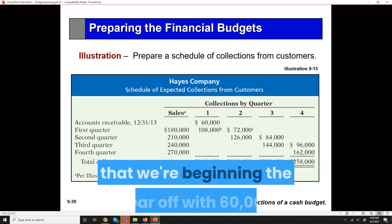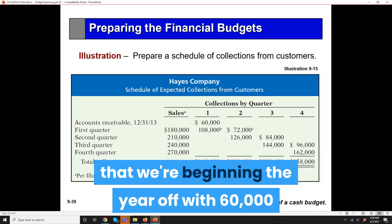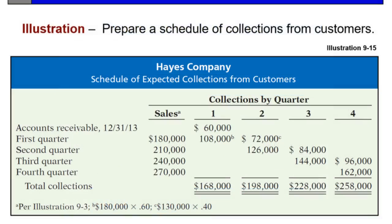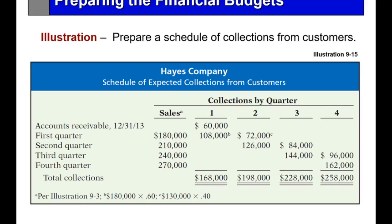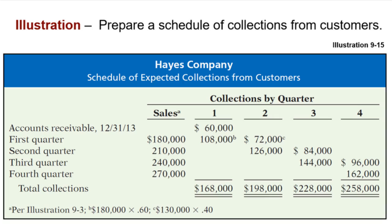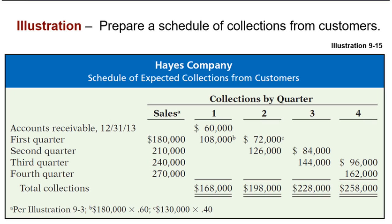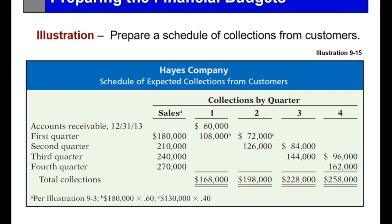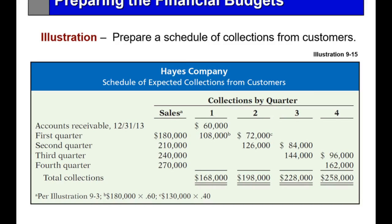We're beginning the year with $60,000 in accounts receivable. First quarter sales from the sales budget is $180,000. I collect 60 percent of that $180,000, or $108,000, in quarter one, so the total amount coming in quarter one is $168,000. In quarter two, I collect the other 40 percent of first quarter sales and 60 percent of second quarter sales, so my total cash in quarter two is $198,000. I do the same for quarter three and quarter four — that gives me the timing of my cash in related to accounts receivable.